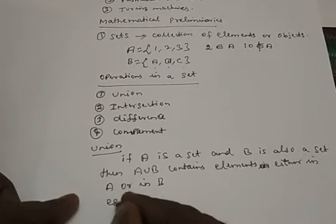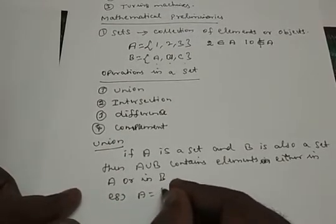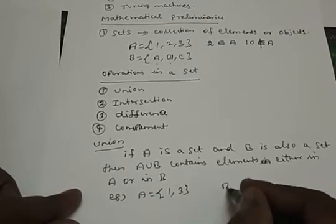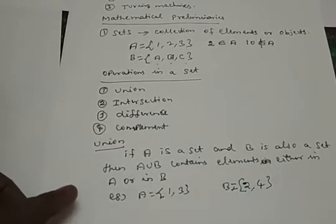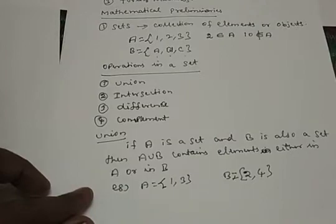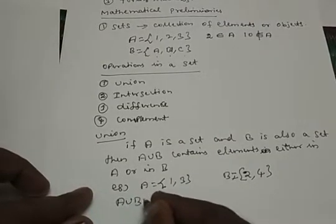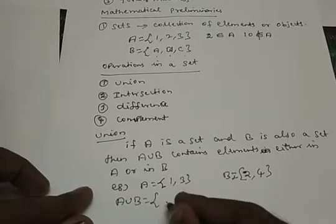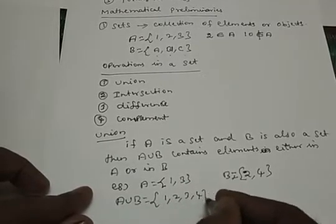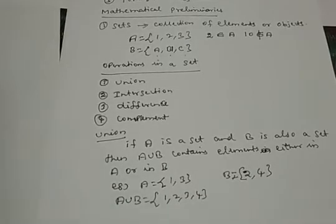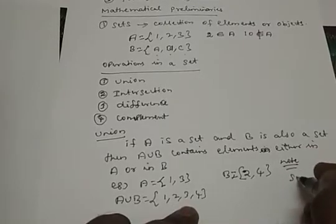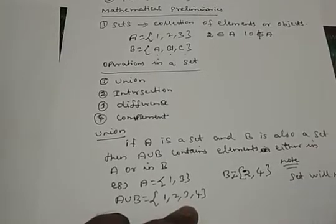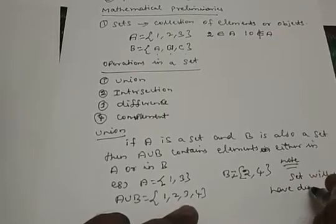For example, let A = {1, 3} and B = {2, 4}. Then A ∪ B = {1, 2, 3, 4}. All the unique elements inside both sets are included. Note that a set will not have duplicate elements. So if you write A = {2, 3, 1, 2, 5}, this is not a valid set because the element 2 appears more than once.